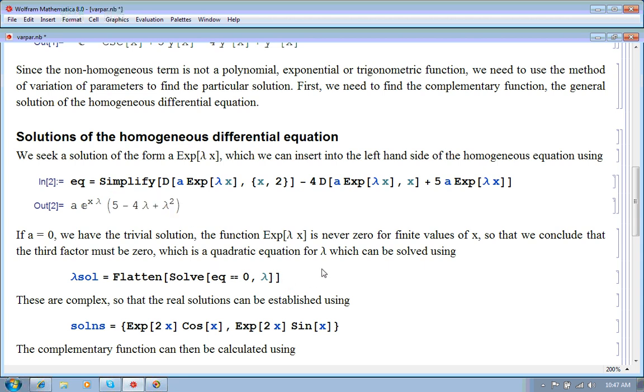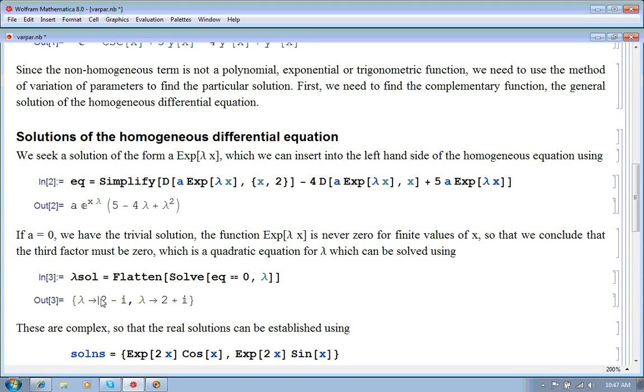So, we conclude that this polynomial here must be zero. So, we know how to solve quadratic equations. So, we solve that and we can see there are two roots, both of them complex, two complex conjugates.